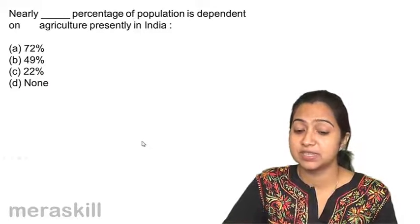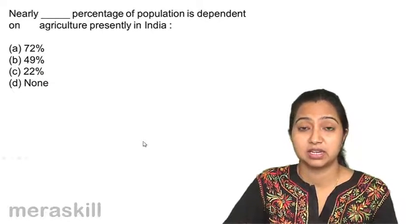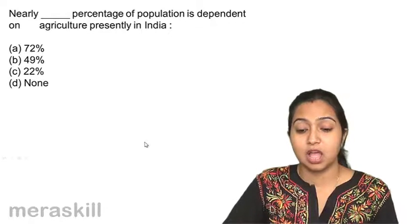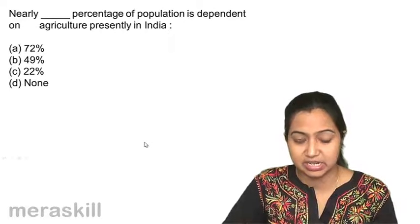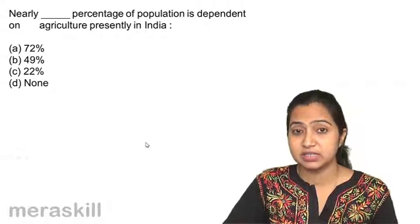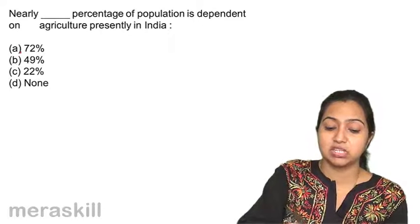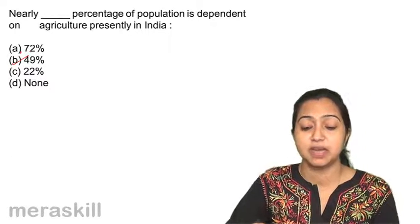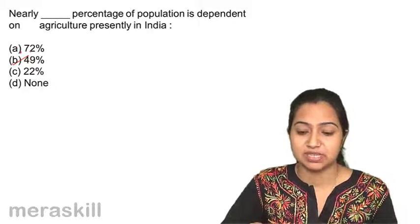Nearly dash percentage of population is dependent on agriculture presently in India. What is the percentage of population that is dependent currently, presently in India? It is 49 percent. 49 percent of the population is dependent on agriculture presently and earlier it was 72 percent.